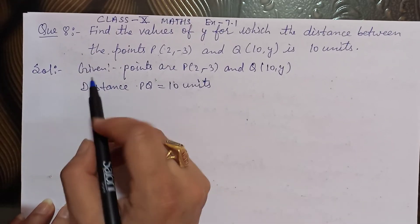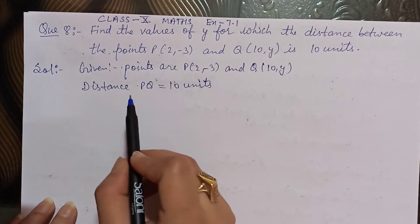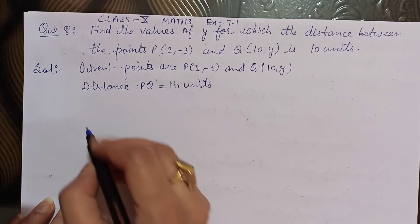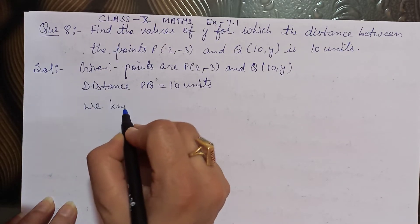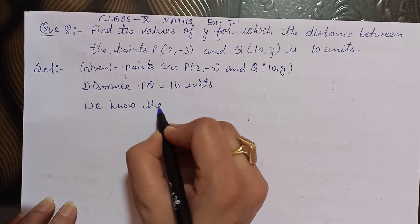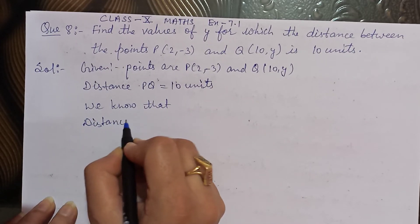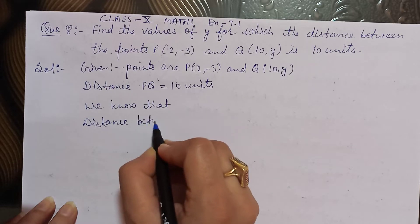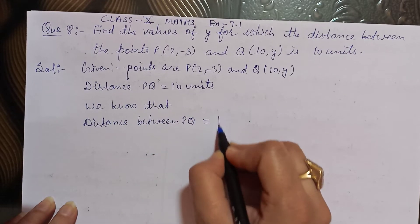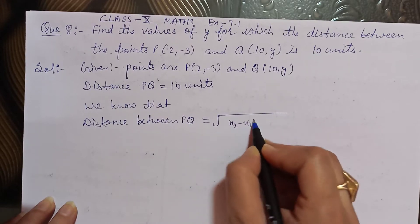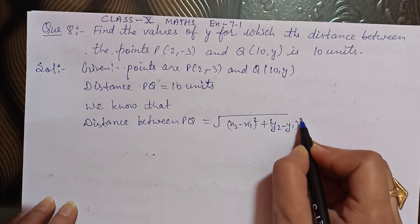Let's see how we do this question. Given, we have written the given information and the distance. We know that the distance between P and Q is equal to √((x2 - x1)² + (y2 - y1)²).